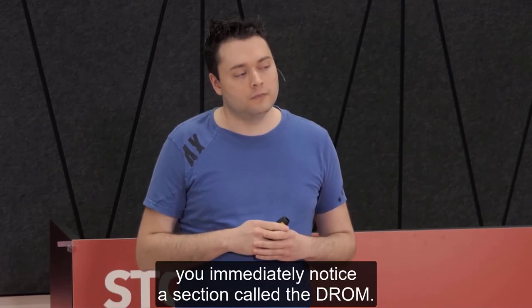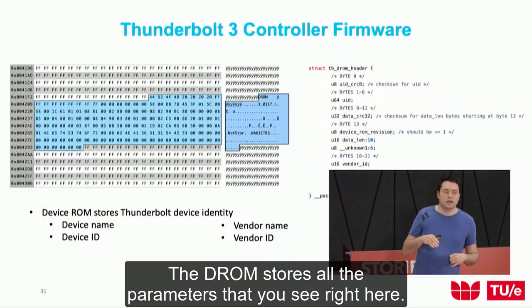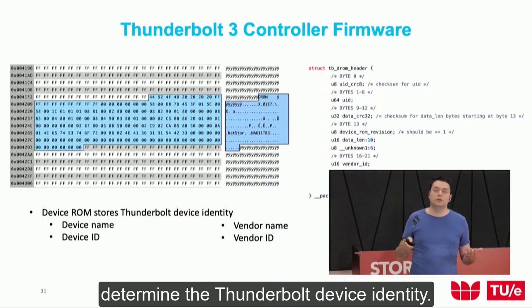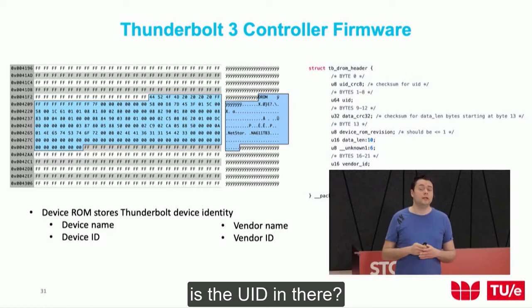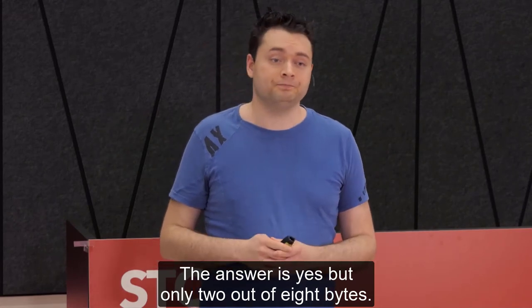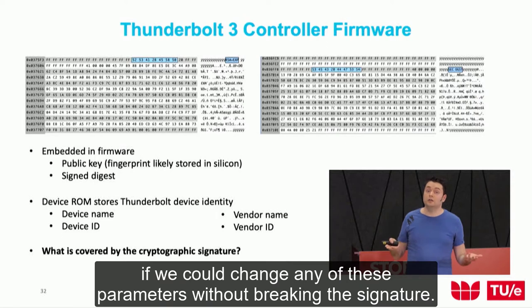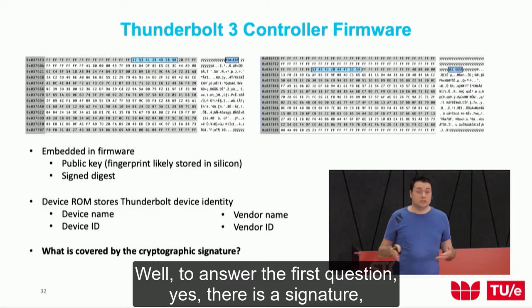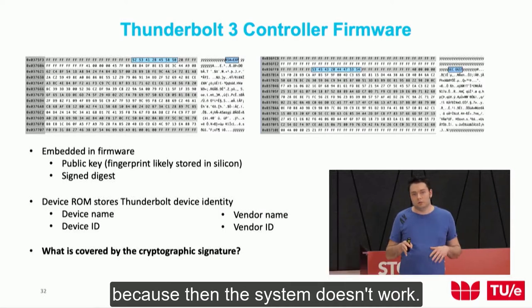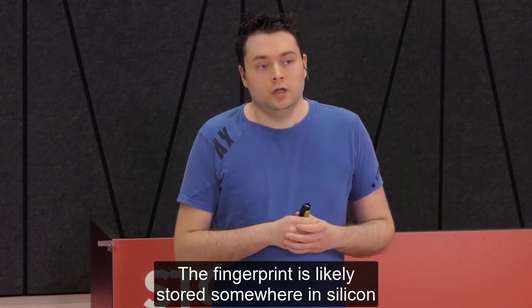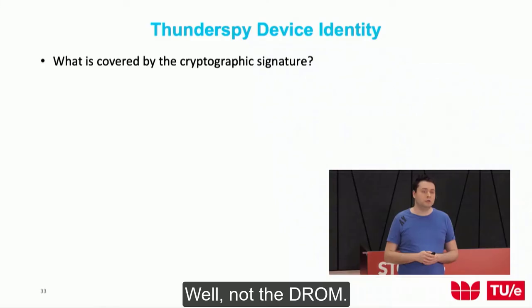The most interesting question was whether the UUID is in the DROM — and the answer is yes, but only two out of eight bytes. We also wanted to know if there is a cryptographic signature and whether we could change any parameters without breaking it. There is a signature, a public key, and a signed digest. We cannot change the public key because then the system doesn't work, so the fingerprint is likely stored in silicon. But crucially, the DROM itself is not covered by the cryptographic signature.